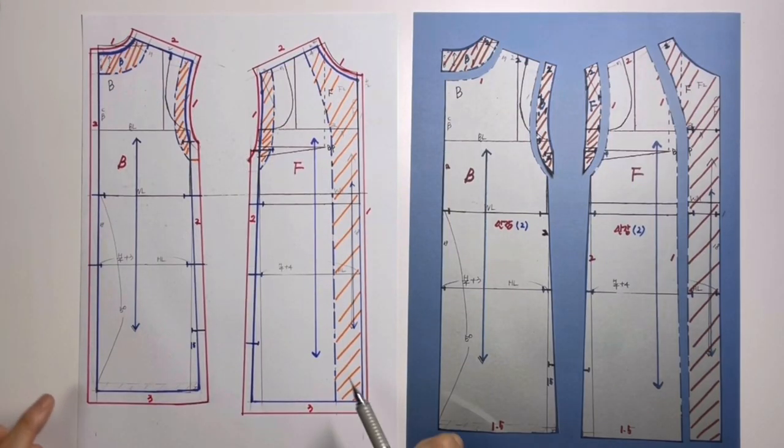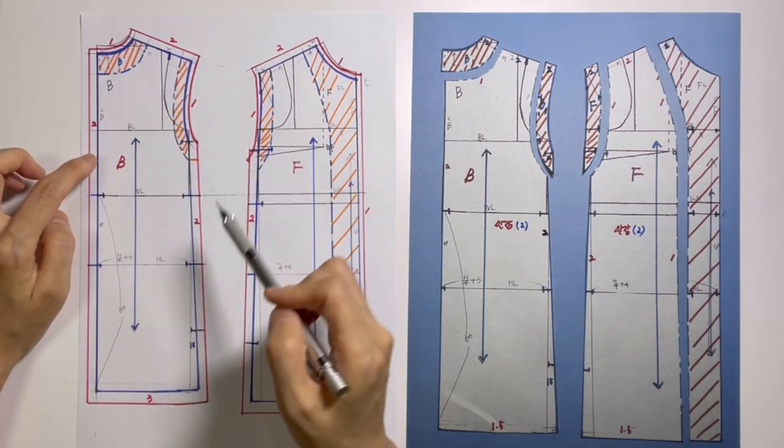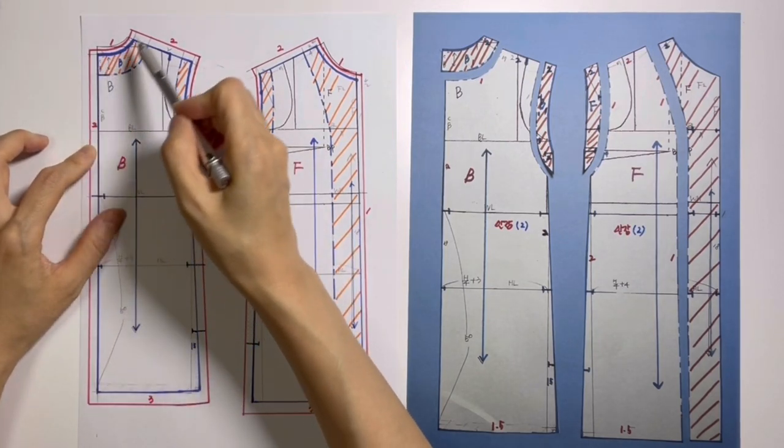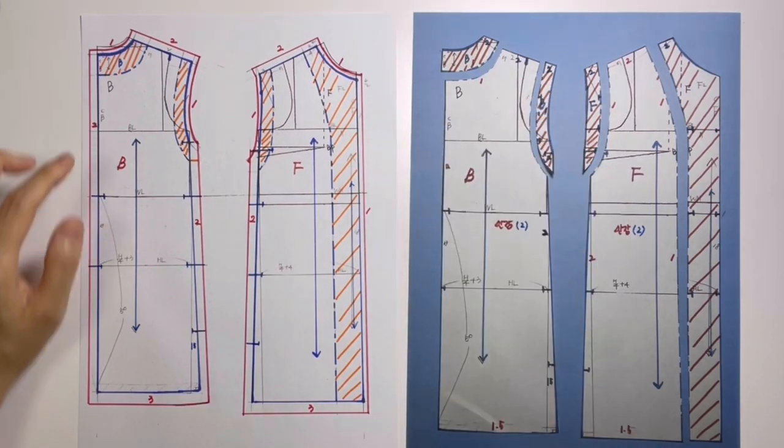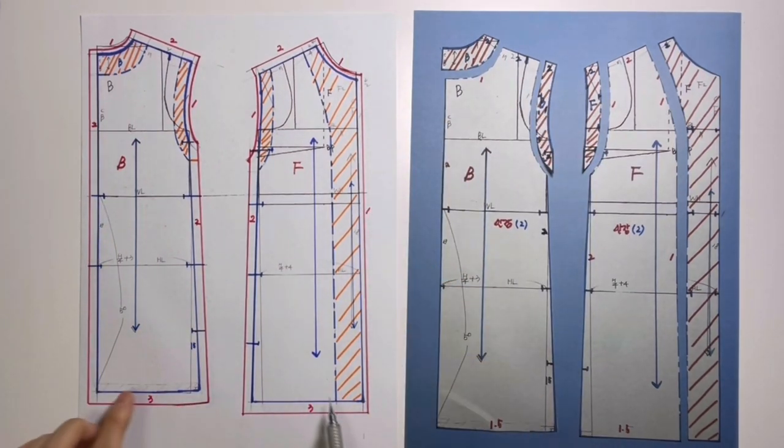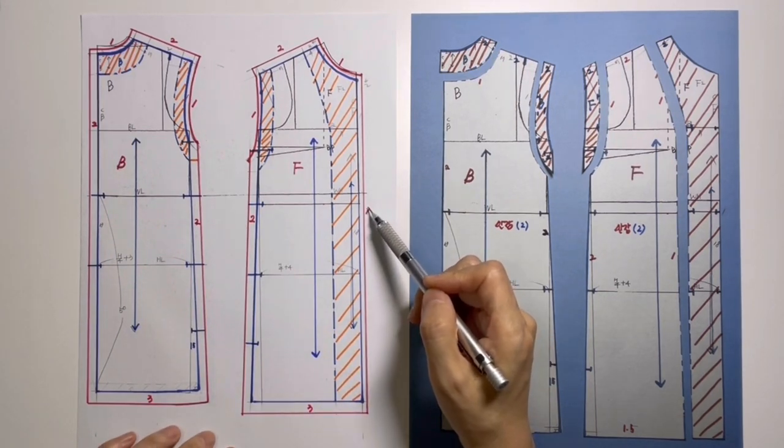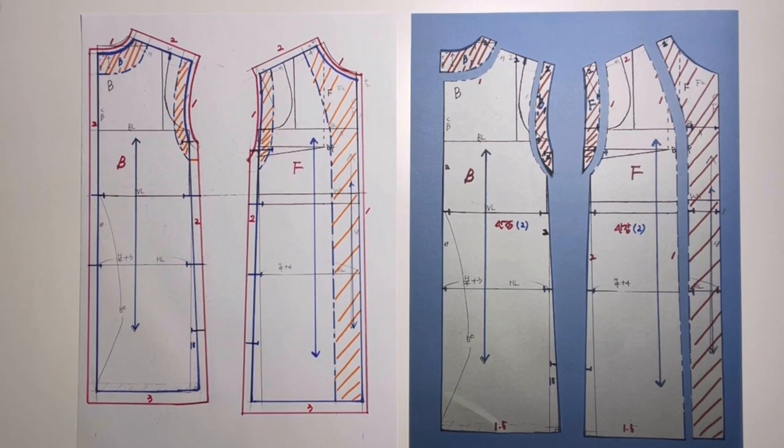When you mark notches like this, you can accurately match the two points when sewing. Let's look at seam allowances. The blue line is the finished line and the red line is the seam allowance line. Shoulder 2, side seam 2, back center 2, all curved portions are 1, 1. Front center is 1. Only the hem is 3. If it's too complicated, just remember straight lines are 2, curves are 1, and only the hem is 3cm. For the front, 1cm is fine but 2cm is also okay. You can trim after sewing.